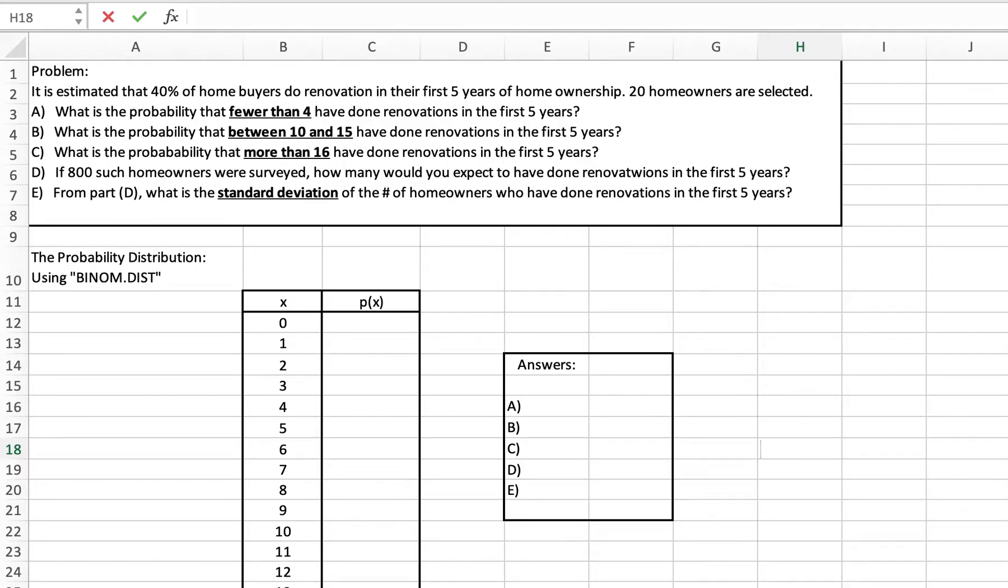Here we have homebuyers who do renovation on their homes within their first five years of home ownership, and the claim is that 40% of these homebuyers will do that. We have 20 homeowners selected, so that means we have a sample of size 20. I'm going to write the information over here: n equals 20 and p equals 0.4 for this binomial probability distribution.